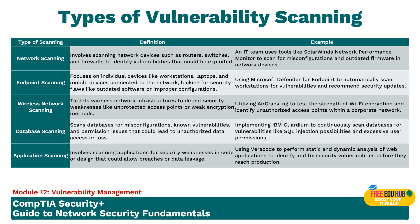Wireless scanning targets the wireless network infrastructure for detecting security weaknesses like unprotected access points and weak encryption methods. This includes identifying unauthorized access points, weak encryption methods, and use of default passwords. Given the unique nature of wireless connectivity, this scan is essential for securing wireless network transmission and preventing unauthorized access. For example, utilizing Aircrack to test the strength of Wi-Fi encryption and identifying unauthorized access points within the corporate network.